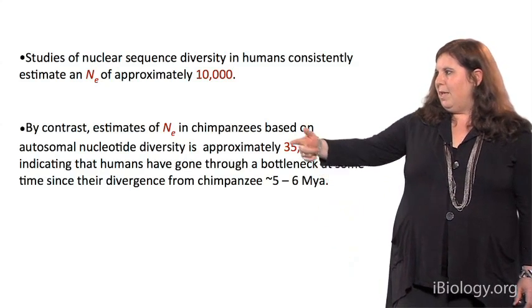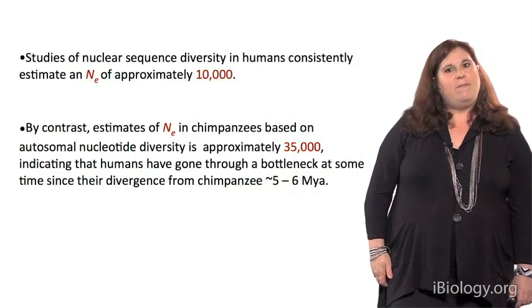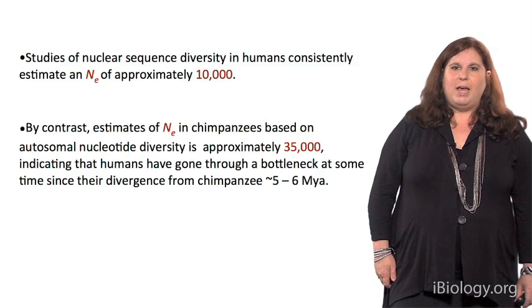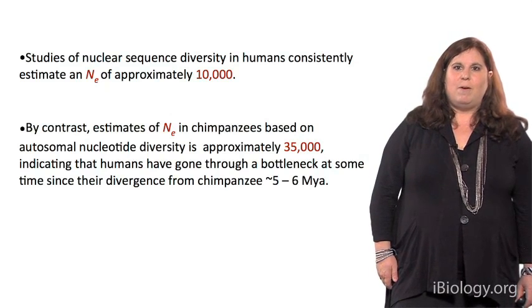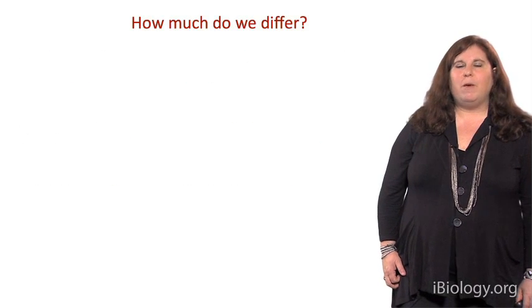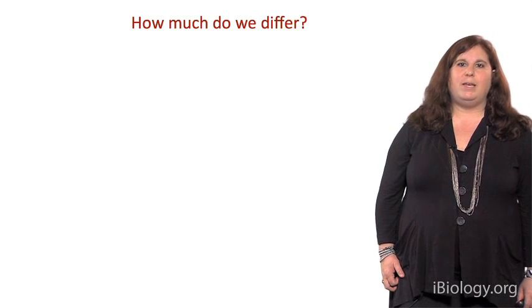Now, by contrast, if we look at chimpanzees, the estimate is closer to 35,000. And so, what that means is that humans have undergone a bottleneck sometime during their evolutionary history. The pattern of genomic variation that we see in modern populations today is a reflection of our evolutionary and demographic history.